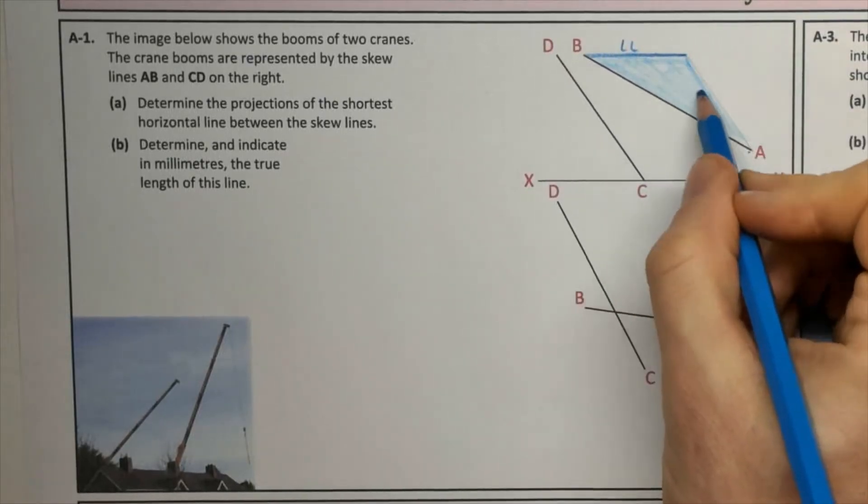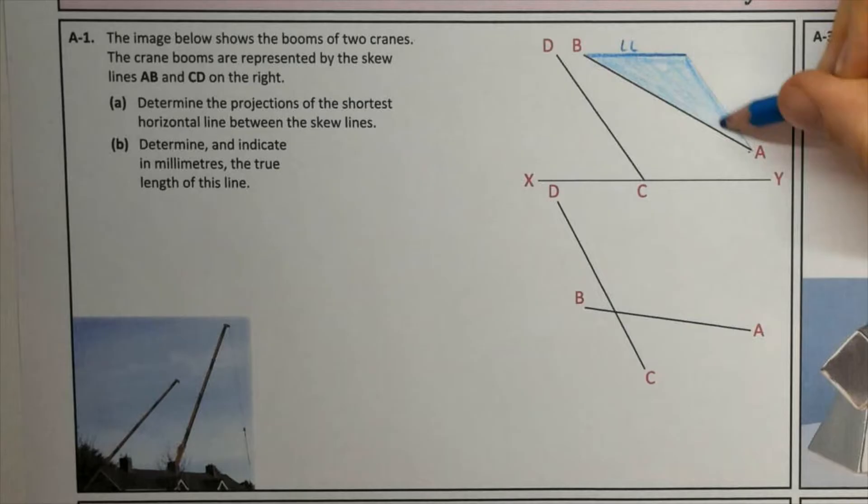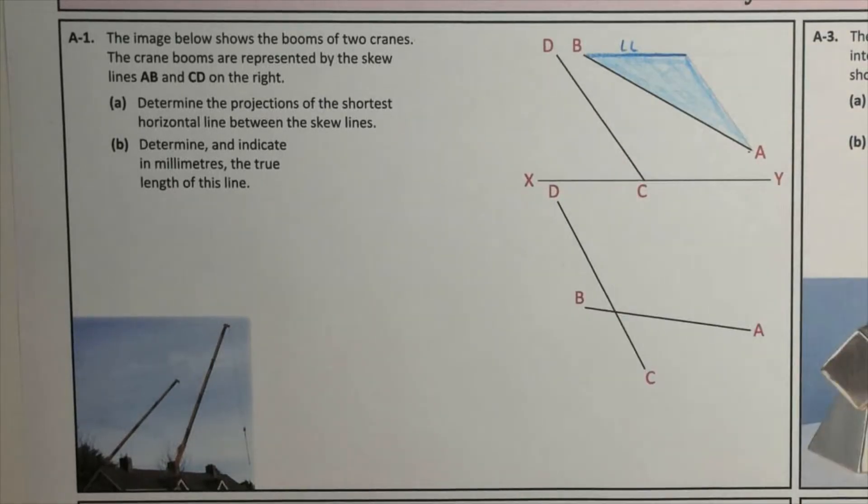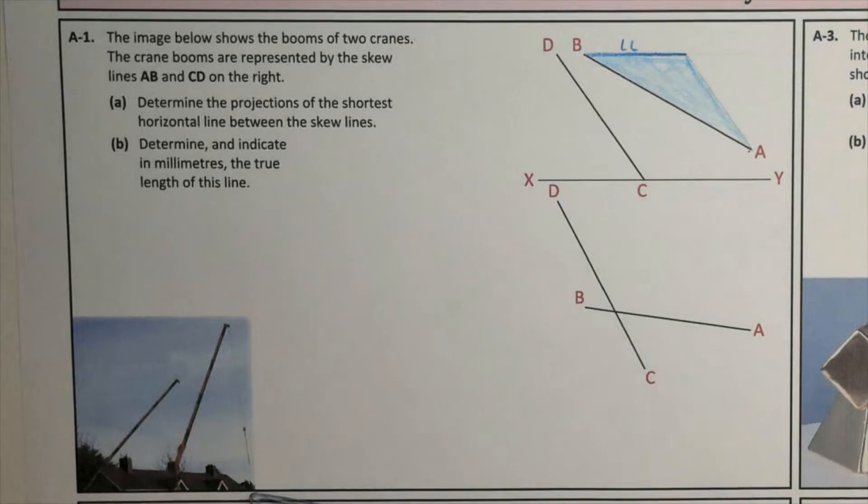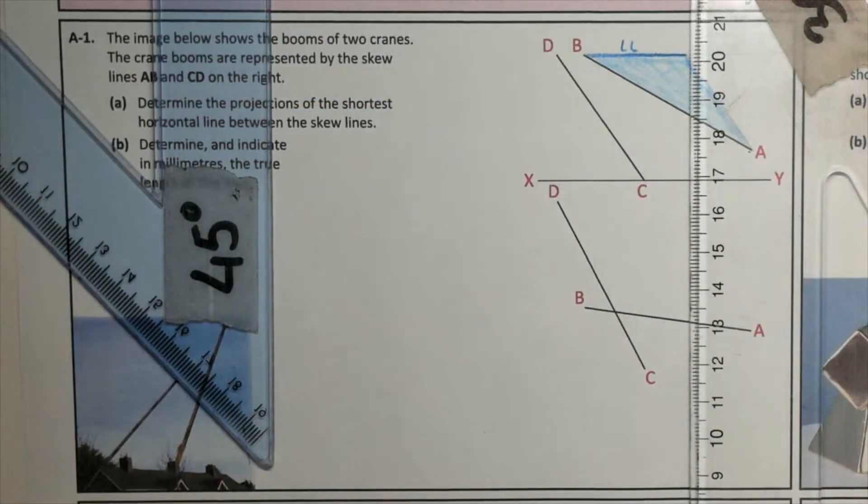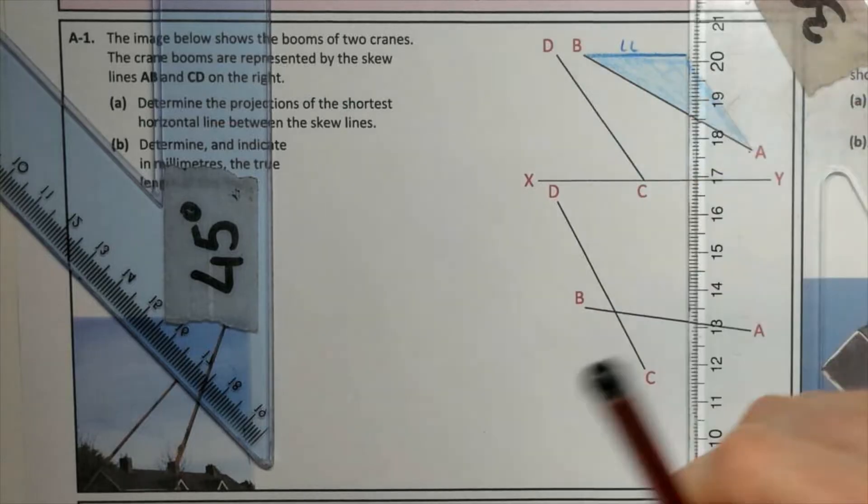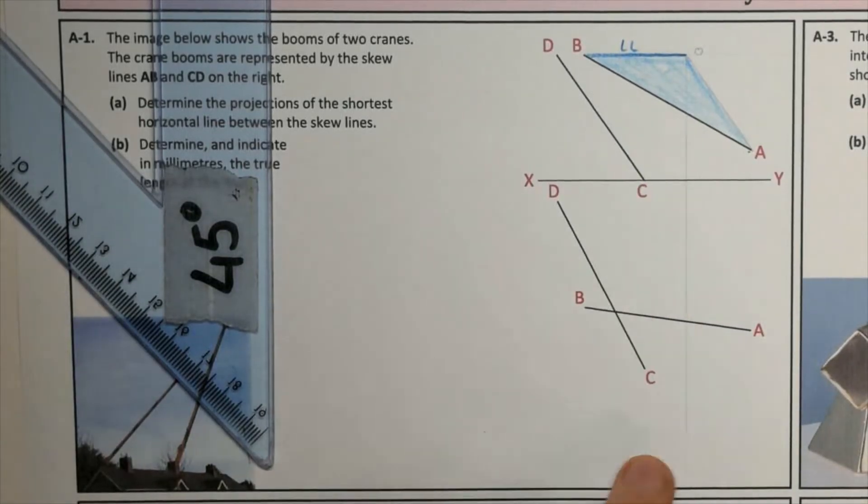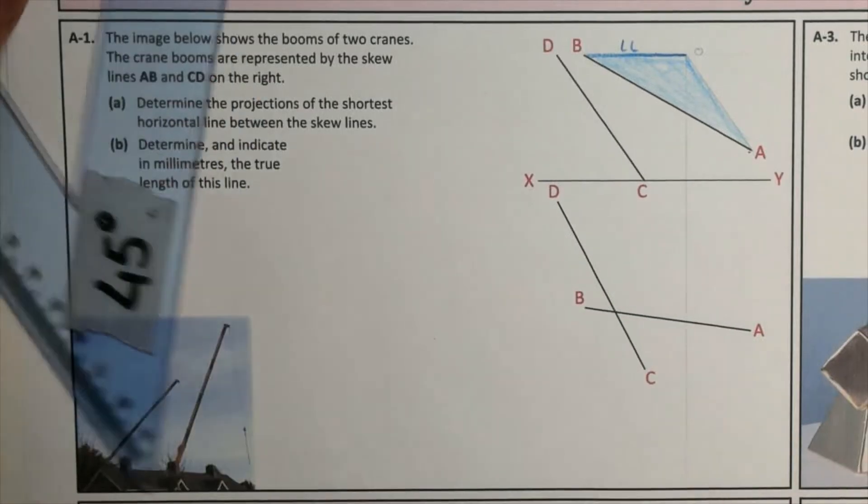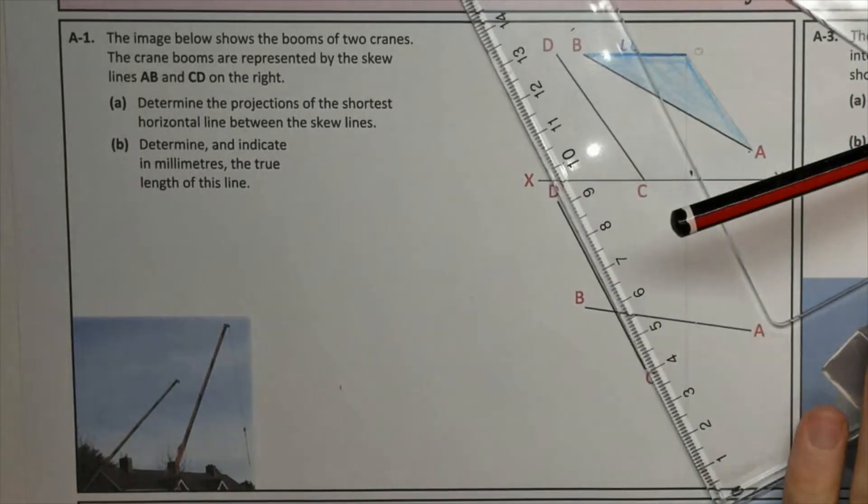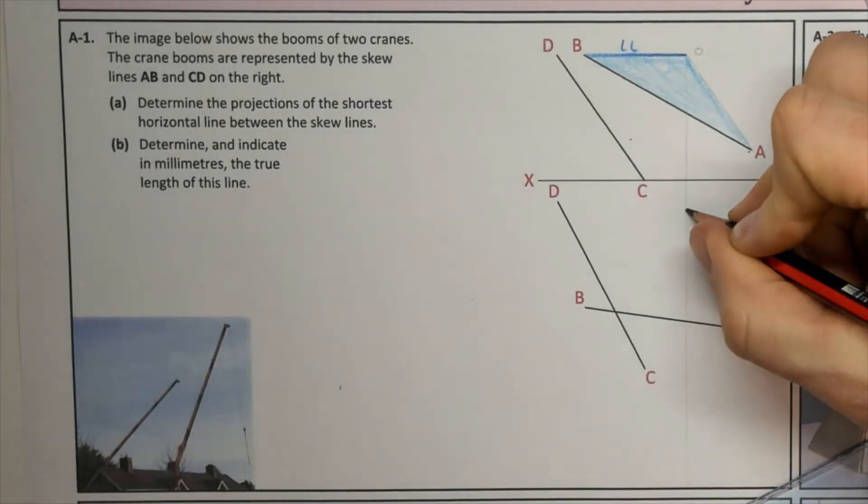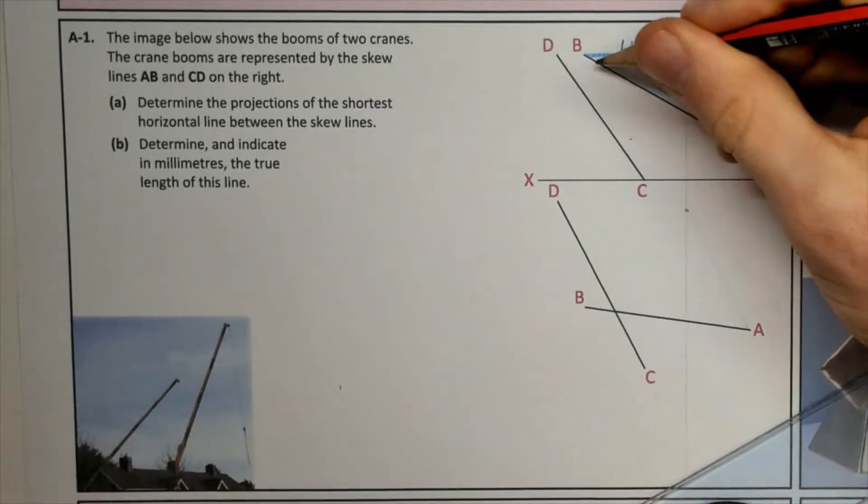So next up what we want to do is we want to see an edge view of that plane. In order to see an edge view of that plane we need to see the level line as a point view. So let's first of all find that level line in plan. So we're going to go and drop that line vertically down at that point. Call that point O. So O is somewhere along there. Parallel lines are parallel in our views. So this line here, parallel to CD will be parallel to CD in the plan view from A. So parallel to CD from A. So that's my position of O. And then our level line is B to O.